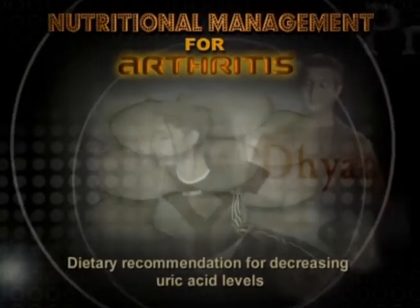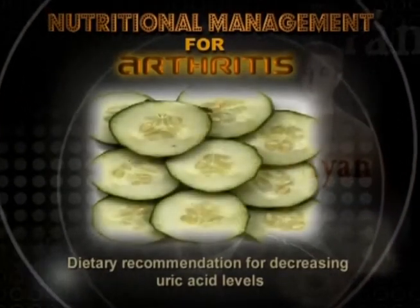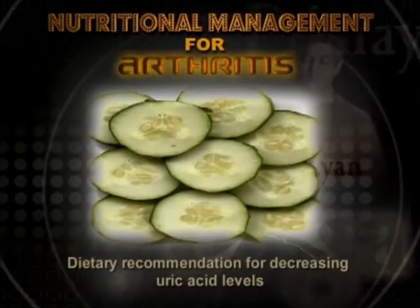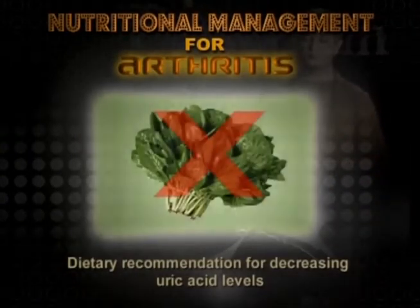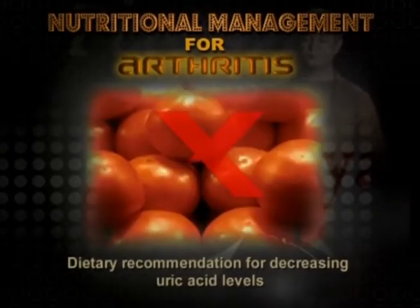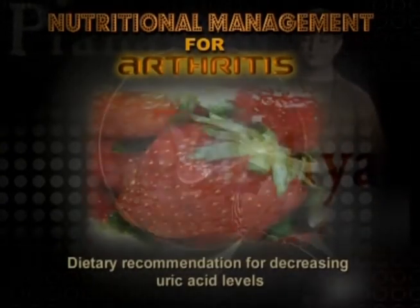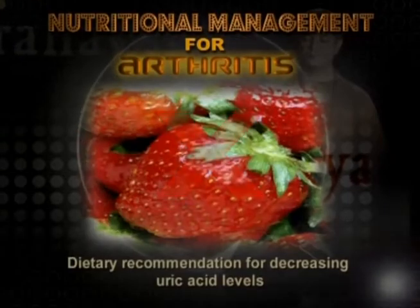Including cucumber in your diet will help reduce the uric acid levels. Avoid foods like spinach, tomatoes, strawberries, etc.